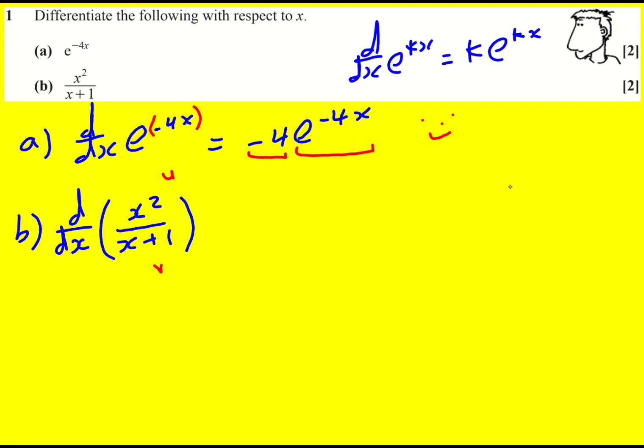So this is u. This is v. u dash is going to be 2x. v dash is going to be 1. The quotient rule says it's u dash v minus u v dash all over v squared.